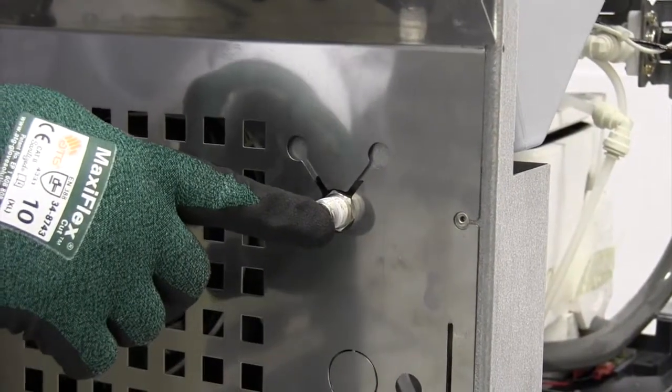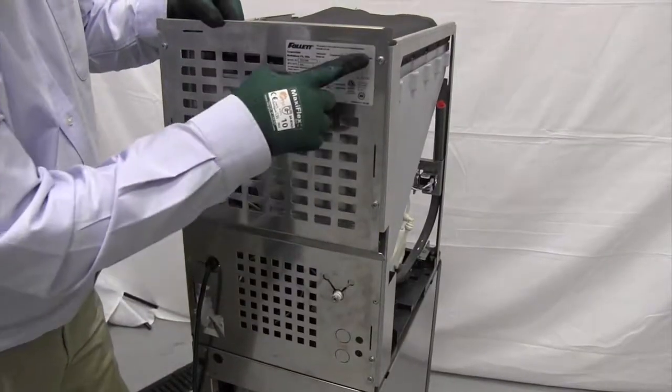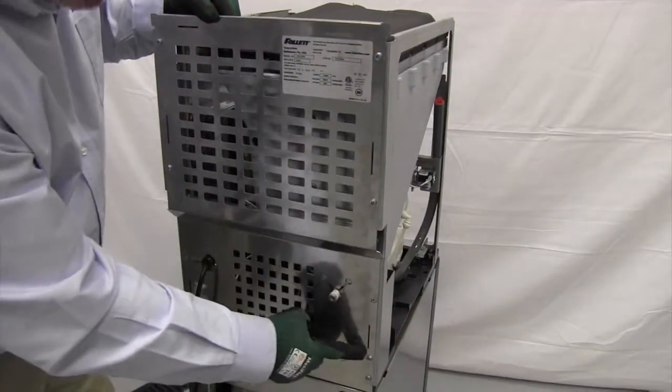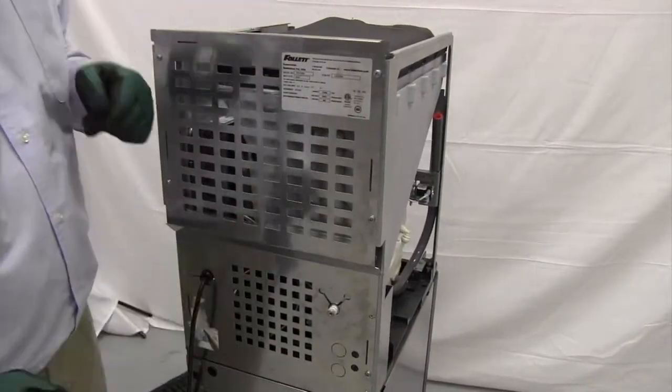We've removed the water inlet connector from the back of the solenoid. There are six screws holding the back panel in place, and we're going to back these six screws out and remove the back panel.